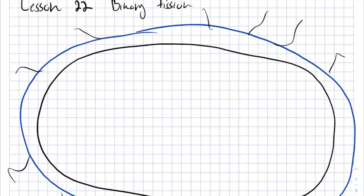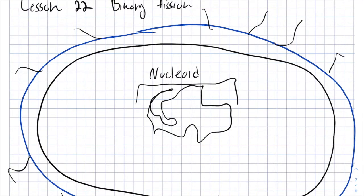And inside the prokaryotic, there is the main large circular DNA in a region called nucleoid and many small plasmids.